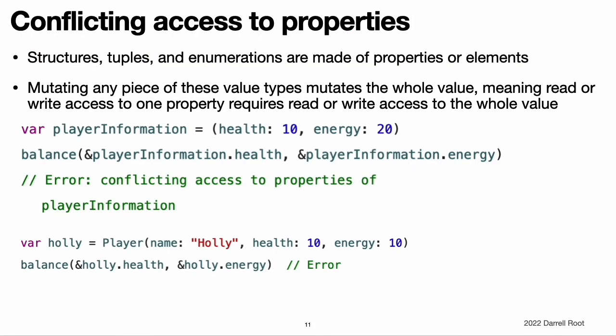Conflicting access to properties. Types like structures, tuples, and enumerations are made up of individual constituent values, such as the properties of a structure or the elements of a tuple. Because these are value types, mutating any piece of the value mutates the whole value, meaning read or write access to one of the properties requires read or write access to the whole value. For example, overlapping write accesses to the elements of a tuple produces a conflict.